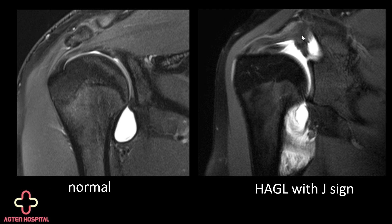We have here an arthrogram and all this bright structure is extravasation or leakage of gadolinium that was injected into the joint, passing through the tear of the HAGL into the periarticular soft tissues. This sign also looks like a J and is frequently called the J sign, which is one of the signs to look for when assessing a shoulder MRI for a HAGL lesion.